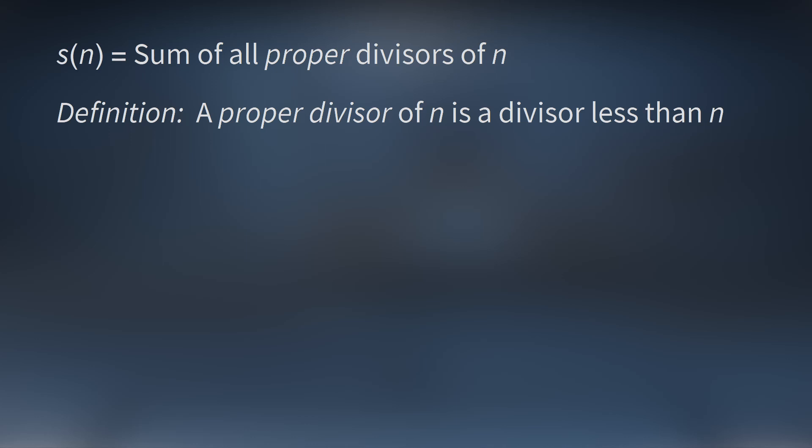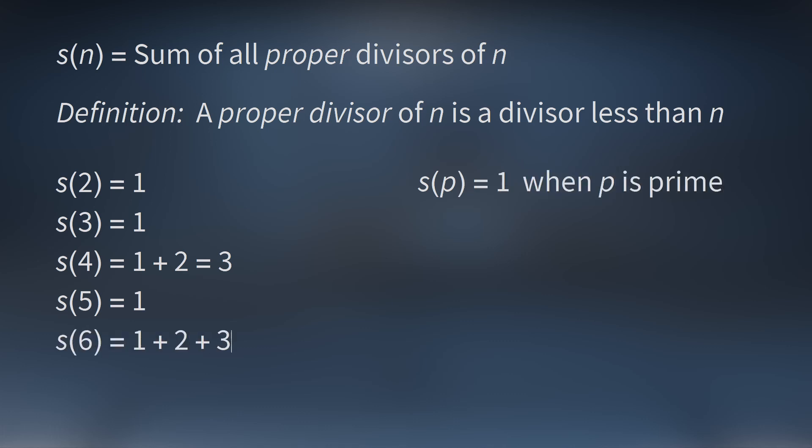We'll start with two. s of two equals one, because if you look at the proper divisors of two, there's just one. Remember, we're not counting the number itself. s of three is also one. s of four is one plus two, which is three. s of five is one. Notice that s of p is one for any prime number p. s of six is one plus two plus three, which is equal to six. s of seven is one. s of eight is one plus two plus four, which is seven. And we can continue.